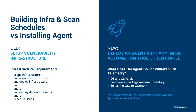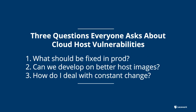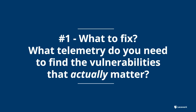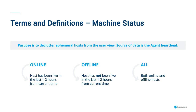Let's dive into what everybody asks about cloud host vulnerabilities. The first question is: what should I fix in prod? How do I figure out what needs to be fixed? Then there's the shift-left piece — how can we develop on better host images? And how do you deal with constant change in the environment? Let's start with: what telemetry do you need to find the vulnerabilities that actually matter? In the cloud, we have ephemeral hosts that are cycling — online and offline. Michael, walk us through our definitions for online and offline and what they look like.